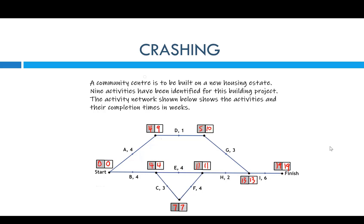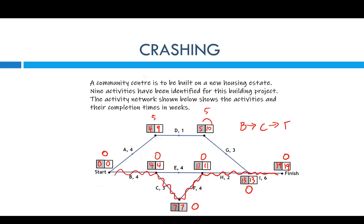So what is the critical path? We've got to look for float times on each activity where it's zero — that'll give us the critical path. Zero minus zero is zero there. There are zeros here, here, here, and here. The float time on these other activities is five. So our critical path goes this way, all the way through. The critical path for this question is B, C, F, H, I — giving us 19 weeks.